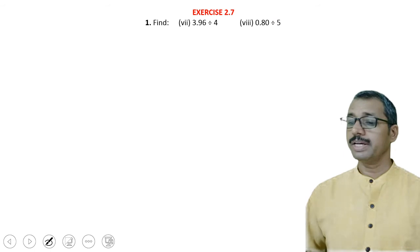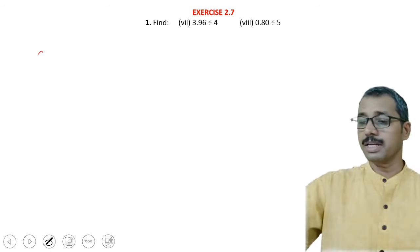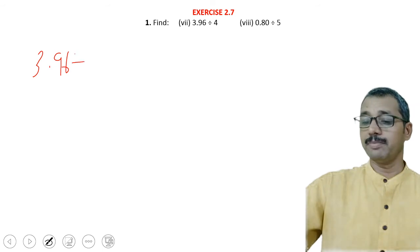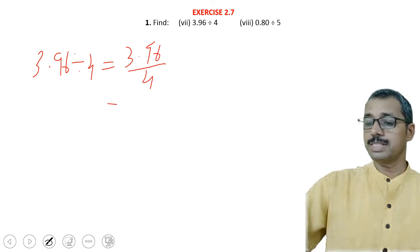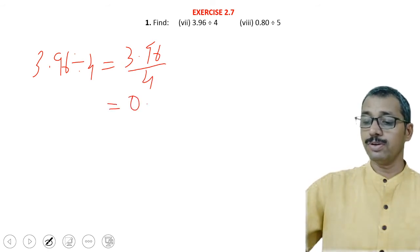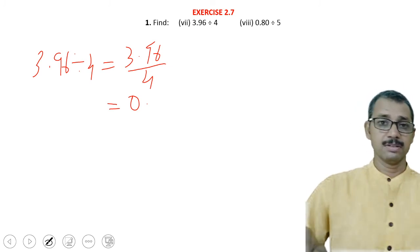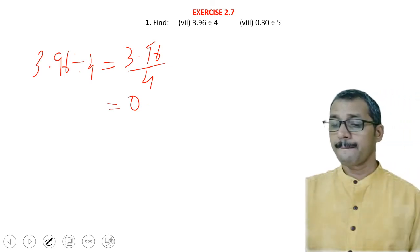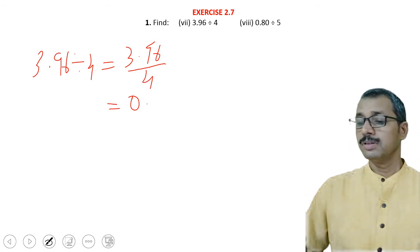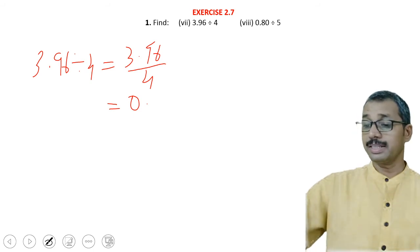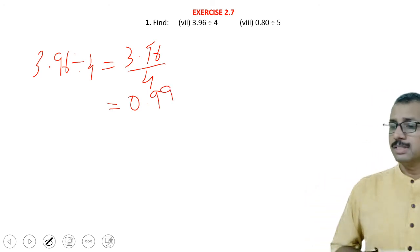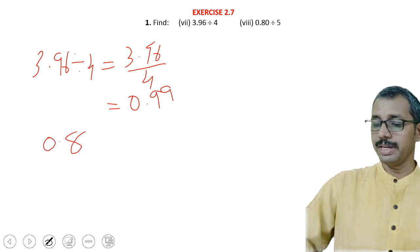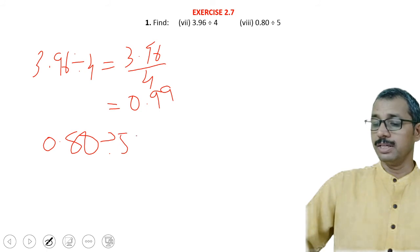The next example is 3.96 divided by 4, which equals 3.96 upon 4. In 3, 4 will not go, so 0. In 39, 4 nines are 36, remainder 3. Bring down 6, making 36 again: 4 nines are 36. The answer is 0.99.